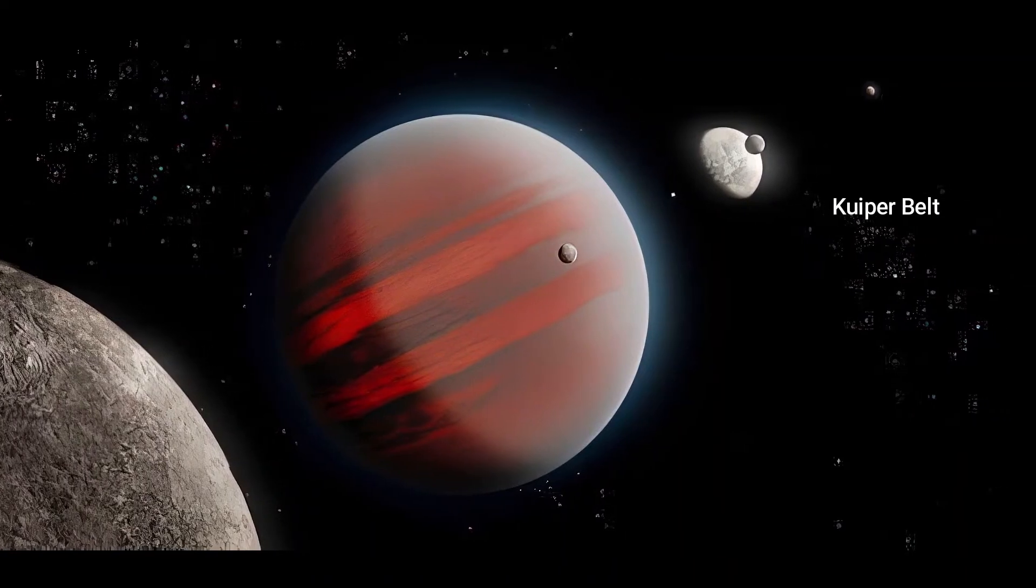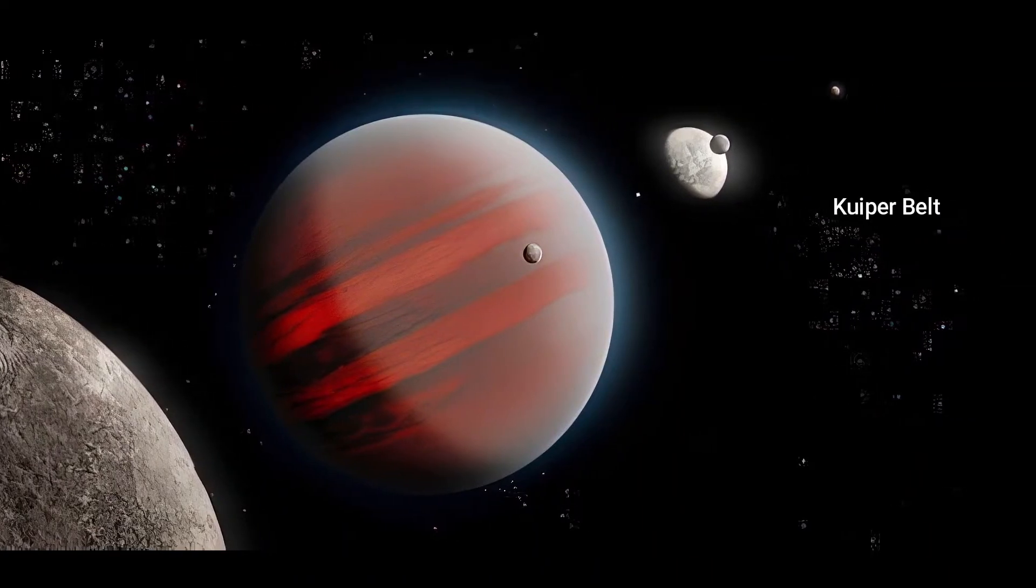The Kuiper belt can be considered to be an extensive version of the asteroid belt. Dwarf planets such as Pluto and Eris, as well as many smaller icy worlds, are found there.